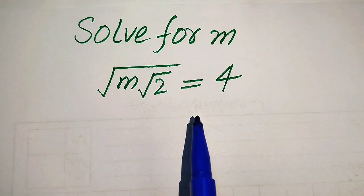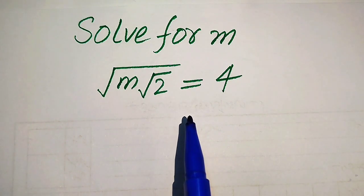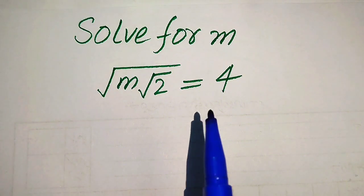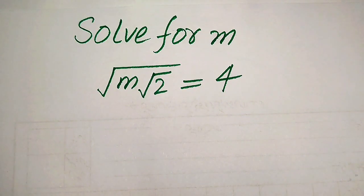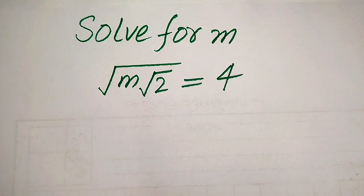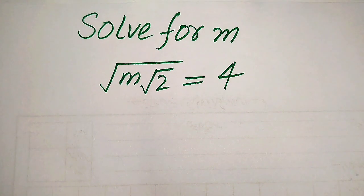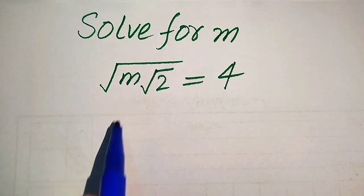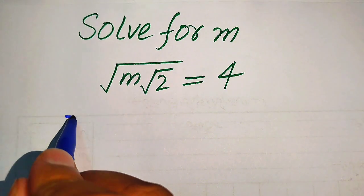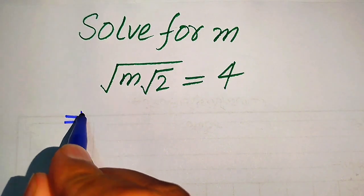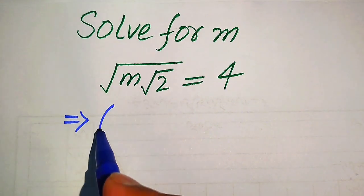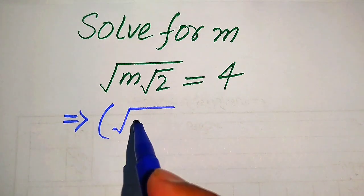At the end I will explain the term extraneous root, so please watch this video to the end. Now the very first thing we are going to do is eliminate this square root sign from the left hand side. For this we need to take squaring on both sides of this equation.